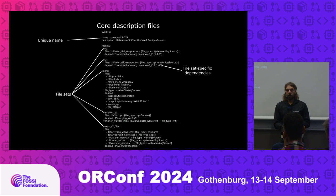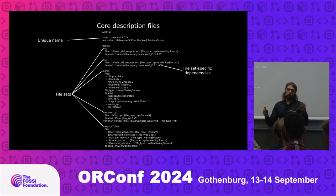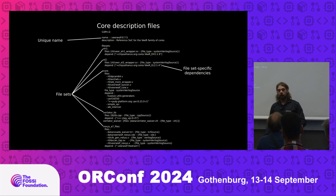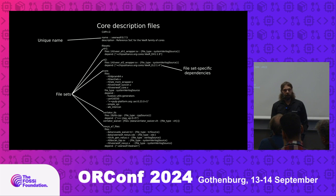So how do you make an IP core FuseSoc compatible? You write a core description file, and that's basically it. You describe a core, which also means you don't need to change anything in the core itself. Many projects like to enforce directory structures, but FuseSoc just tries to adapt to whatever you have, so it's very flexible. The most important things you describe are the name, which files it contains, and which dependencies you have on other cores.